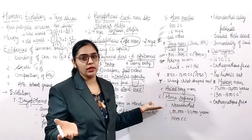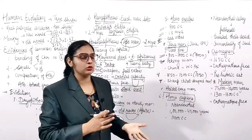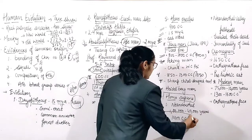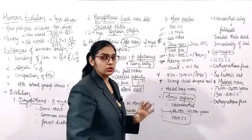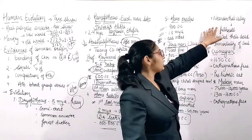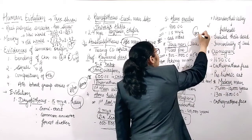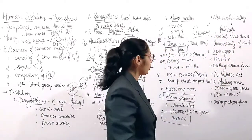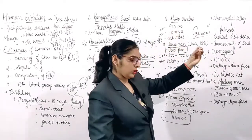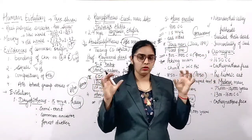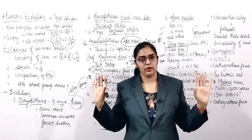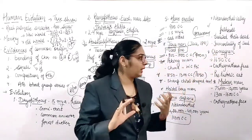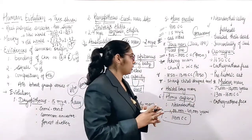Neanderthal Man is a sub-species of Homo sapiens. They lived from around 1,00,000 to 40,000 years ago. Their cranial capacity was 1400 cc. They were found in the Neanderthal Valley of Germany, discovered by Fuhlrott. They were the humans who buried their dead and believed the soul is immortal.